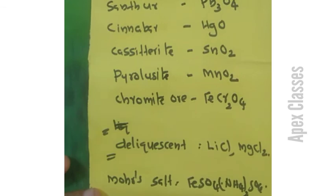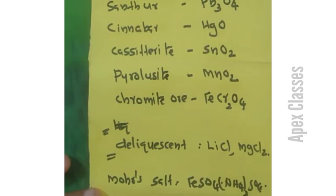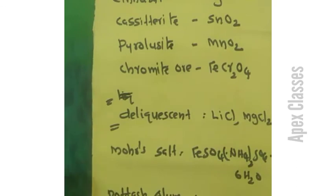Potash Alum is K2SO4·Al2(SO4)3·24H2O. These are some important compounds and their chemical or molecular formulas. Thank you.